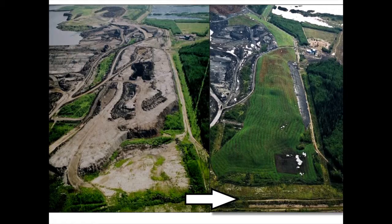This is where landform design comes into play. This is an example of an overburden dump before and after. In the background you can see the mined-out pit, and the overburden dump itself has been constructed in a series of layers or lifts. The goal of this landform is first and foremost to be geotechnically stable — both in the short term during construction and reclamation phases, and also in the long term at closure and post-closure. The slopes here are designed to be geotechnically stable and prevent catastrophic movement of sediments downstream.